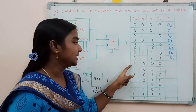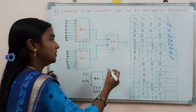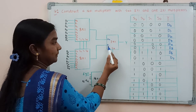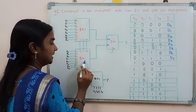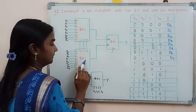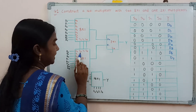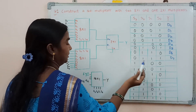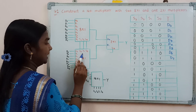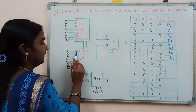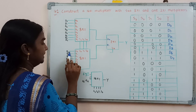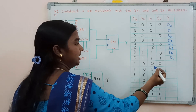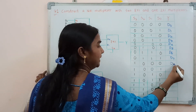For the other combinations when S3 equals 1, it selects the lower 8-to-1 multiplexer. The selection lines S2, S1, S0 have binary data 0, 0, 0, so based on this it selects the D0 input of the lower multiplexer, which means D8 data is transmitted to the output. So the output is D8.